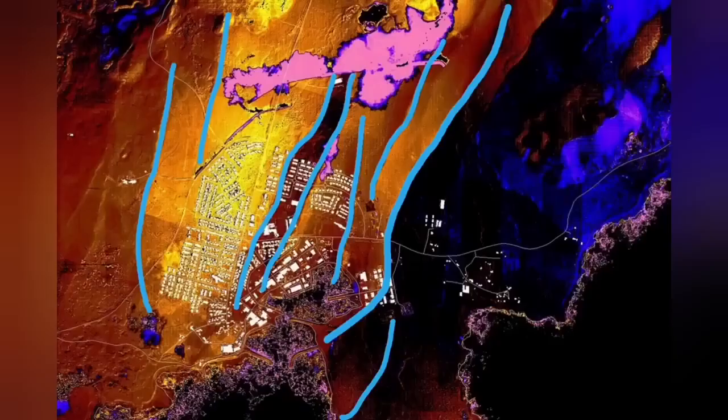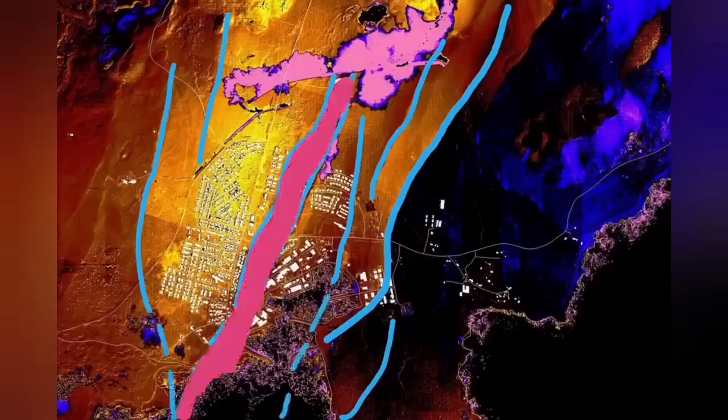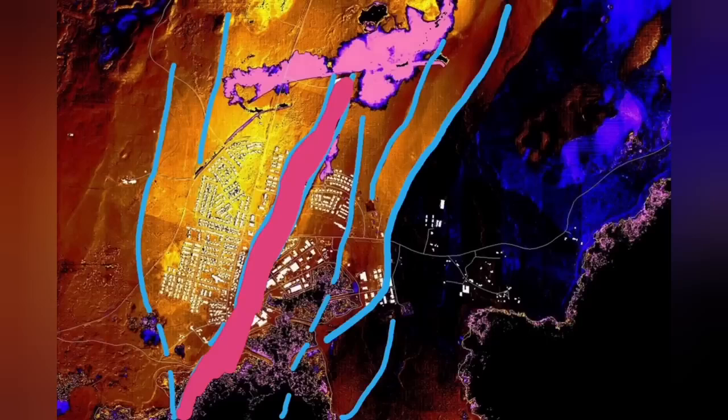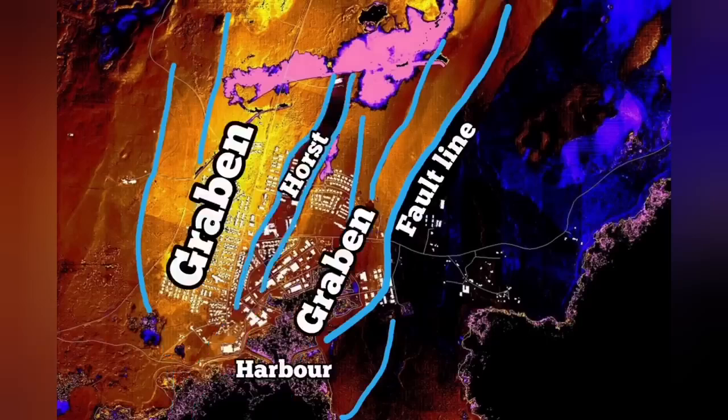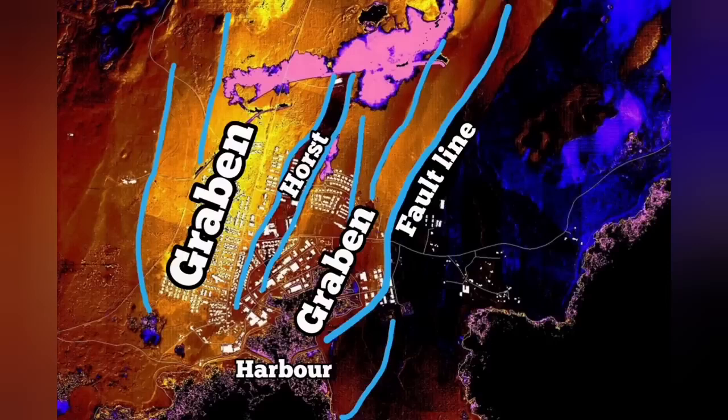Before that we had it to the north of Grindavik in Hagafell and Sundhnukagigar. We had eruptions in November, we had the earthquake then December eruption and January again eruption through this graben that you can see in the middle part and the fault lines and the horst in the middle. We had cracks in Grindavik but no eruption, magma was not there.